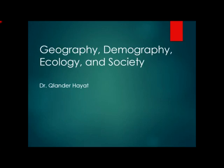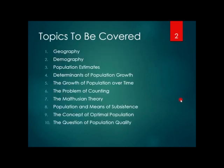The topics of social science covered in this lecture are geography, demography, ecology, and society. After completing this lecture, you will be able to understand ten topics: geography, demography, population estimates, determinants of population growth, the growth of population over time, the problem of counting, the Malthusian theory, population and means of subsistence, the concept of optimal population, and the question of population quality.